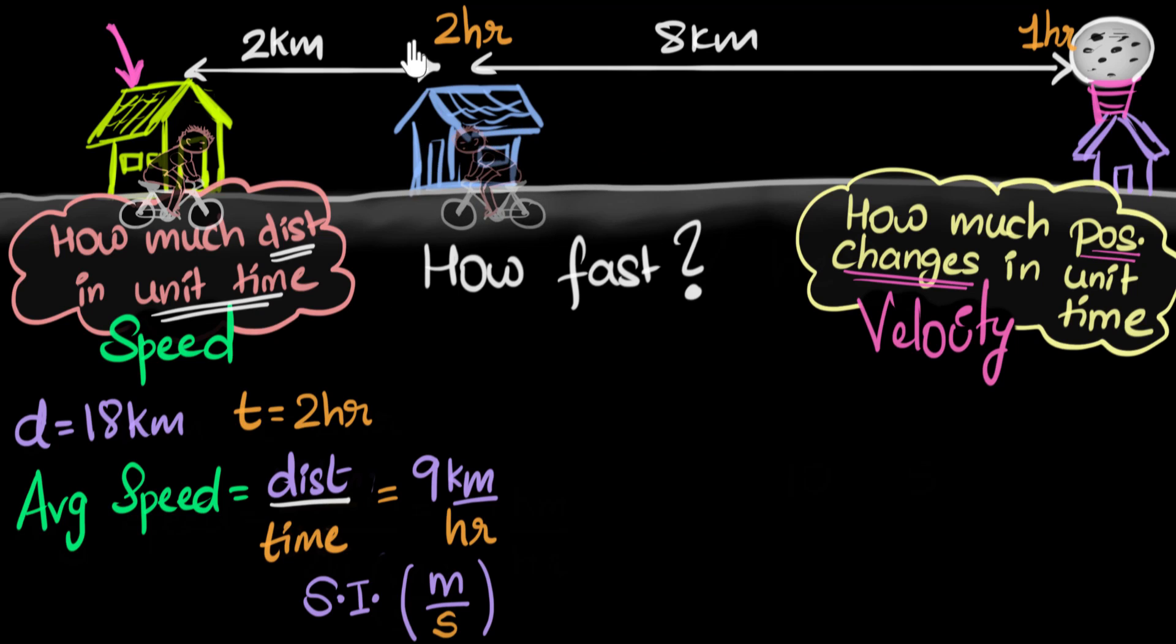Well, he has now reached my house at the end of two hours. So in two hours, how much did his location change? How much did his position change? Can you see it only changed by two kilometers? Now I know that he has traveled 18 kilometers. The distance that he has traveled is, yes, 18 kilometers. But as far as his position is concerned, it has only changed by two kilometers. And velocity keeps track of how much that is changing in a unit time.